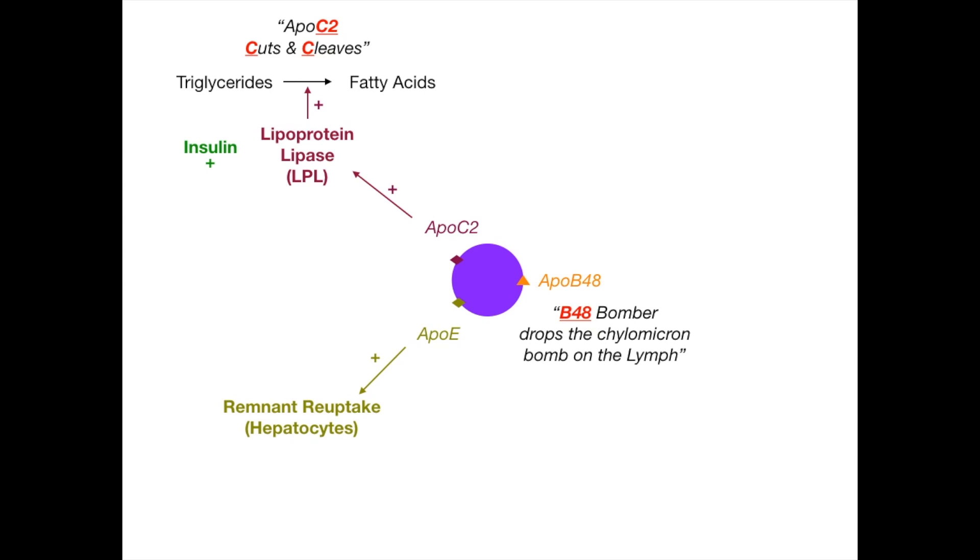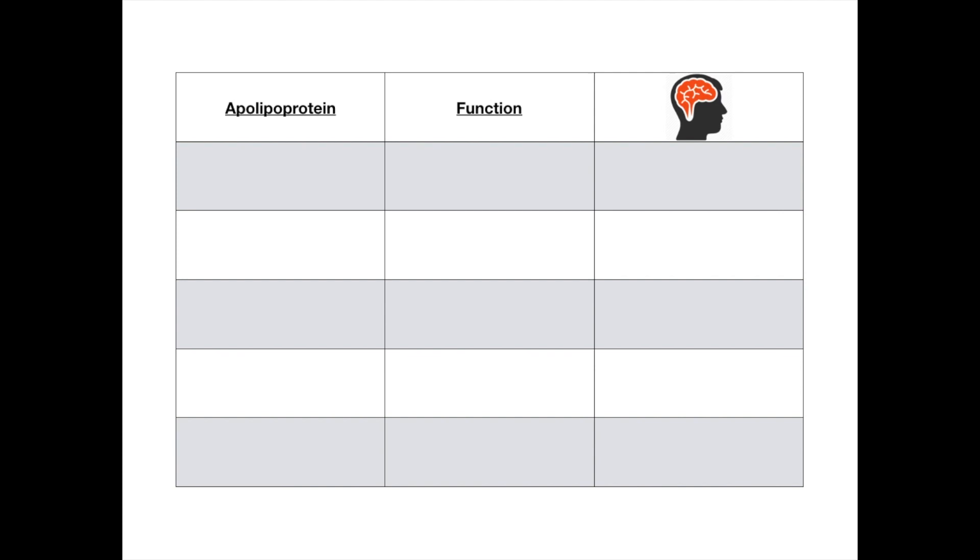Now, how are you going to remember that? Because it's very important. Well, I say that Apo E, Apo eats the remnants. So it eats up the remnants, it takes them back up, recycles them through the system.